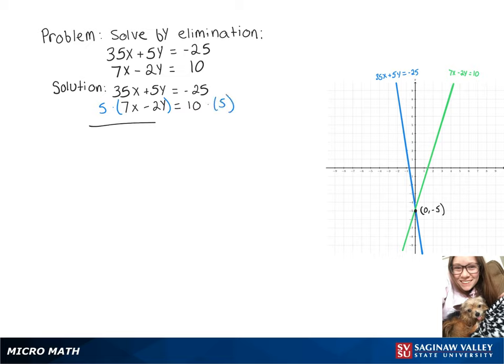So we still got our first equation, which is 35x plus 5y equals negative 25, and our second one turns into 35x minus 10y equals 50.